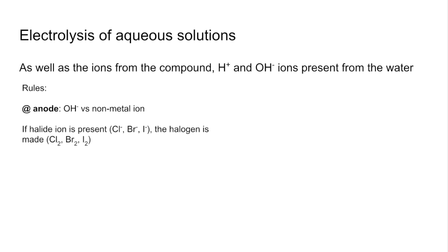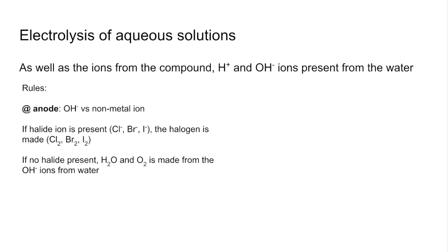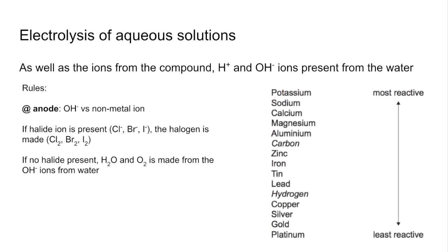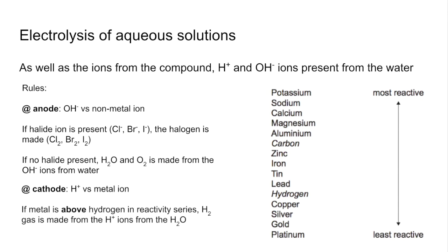The rule for the anode is: if you've got a halide present — for example chloride, bromide, or iodide — then you're going to get the halogen produced. So if chloride ions are present you'll make chlorine at the anode. If there's no halide ion present, then water and oxygen are made from the hydroxide ions from the water. For the cathode, we bring in the reactivity series. The rule is: if the metal is above hydrogen in the reactivity series you get hydrogen gas from the H+ ions; if the metal is below hydrogen you get the metal produced instead.